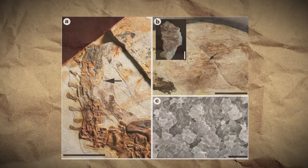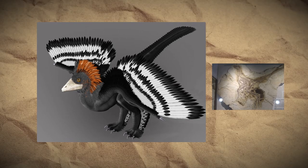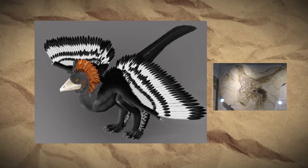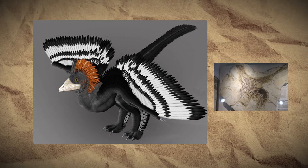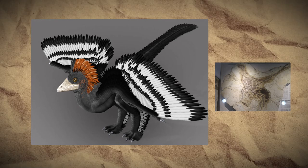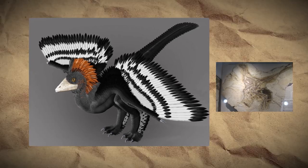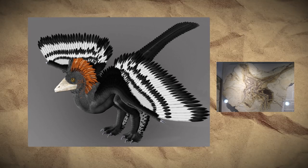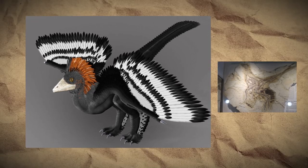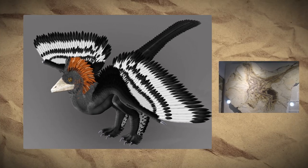Researchers also found that the Microraptor had a glossy, iridescent sheen in its feathers, and that the Anchiornis, a Jurassic dinosaur, had feathers that were mostly gray with black and white stripes on the wings and a big red head crest. Studies like these changed our knowledge of dinosaurs — not only do we know they were feathered, but we now know what those feathers were most likely used for: body temperature control and communication.